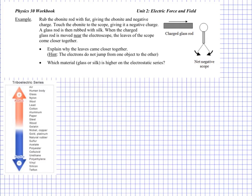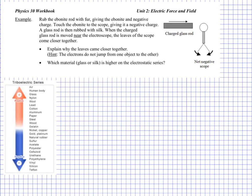Ebonite is basically rubber, so we need to reference our triboelectric series here. Materials that tend to gain a negative charge are down this side, and materials that gain a positive charge are up this side. So if we consider ebonite to be rubber and fur to be hair, well, ebonite or rubber is going to be given a negative charge quite easily, whereas hair will give a positive charge. In other words, hair will be giving the electrons to the ebonite. So the ebonite comes into contact and touches the scope, which means the net negative charge on the ebonite rod has now been conducted into the electroscope. That's meant that the leaves — these legs at the bottom — have spread apart, and we can see that.